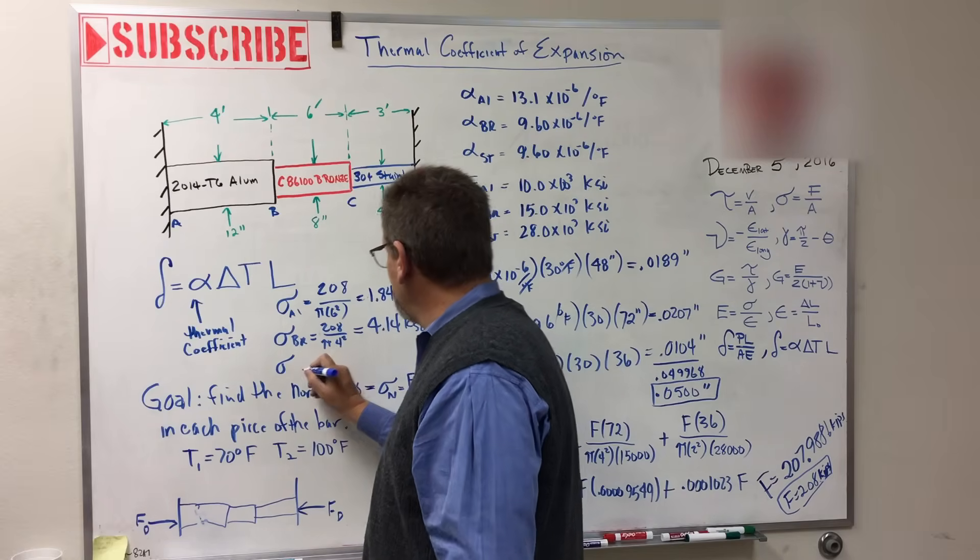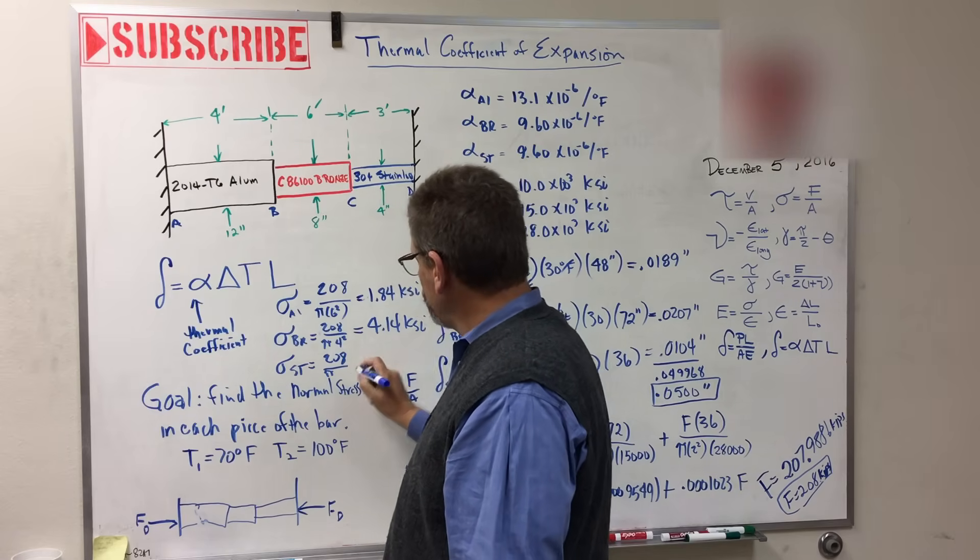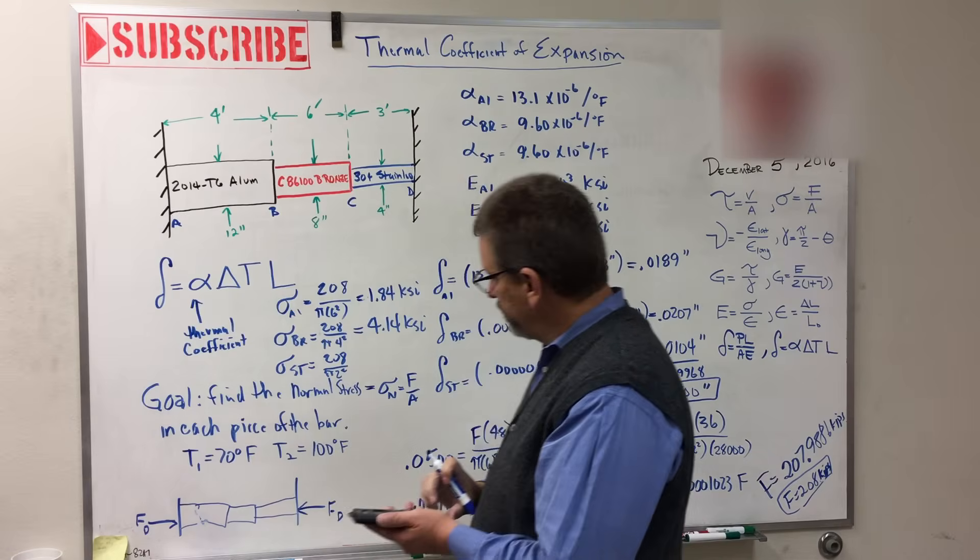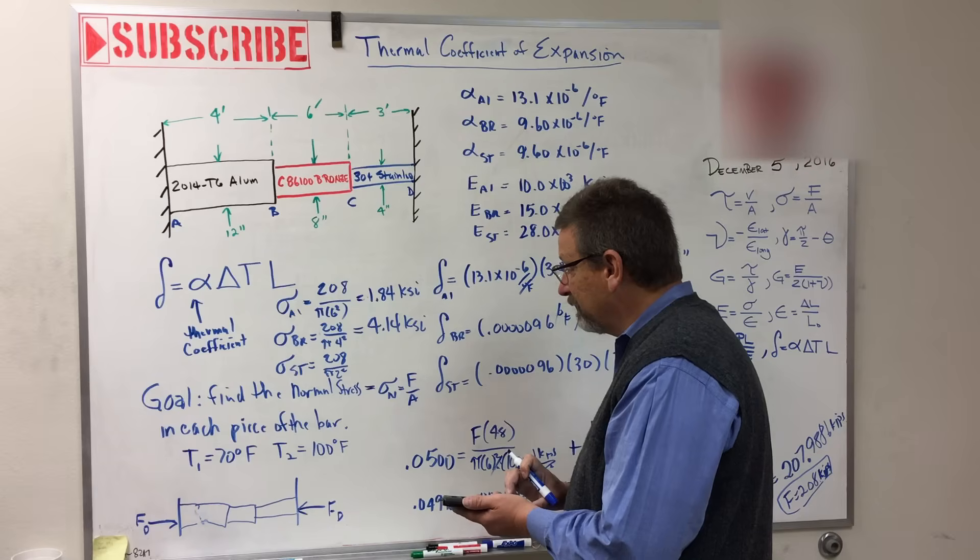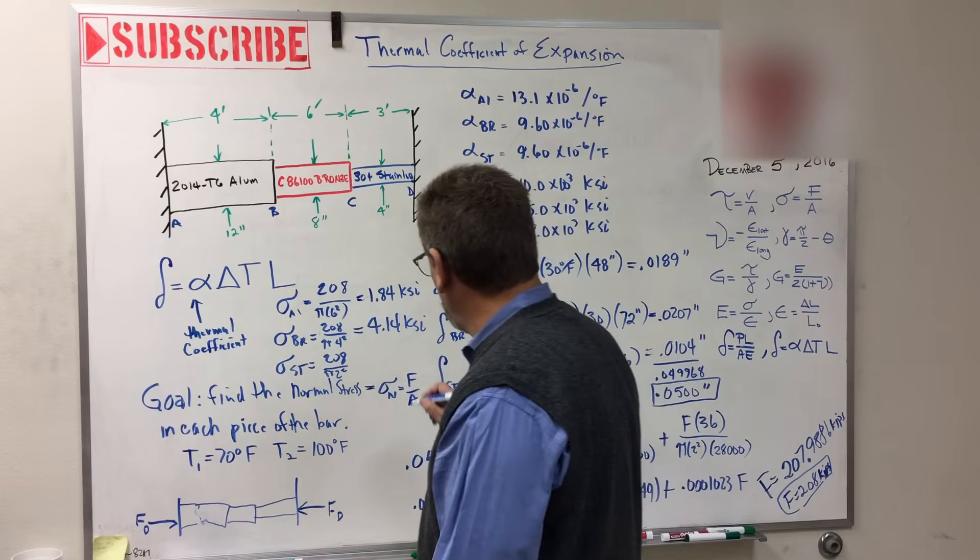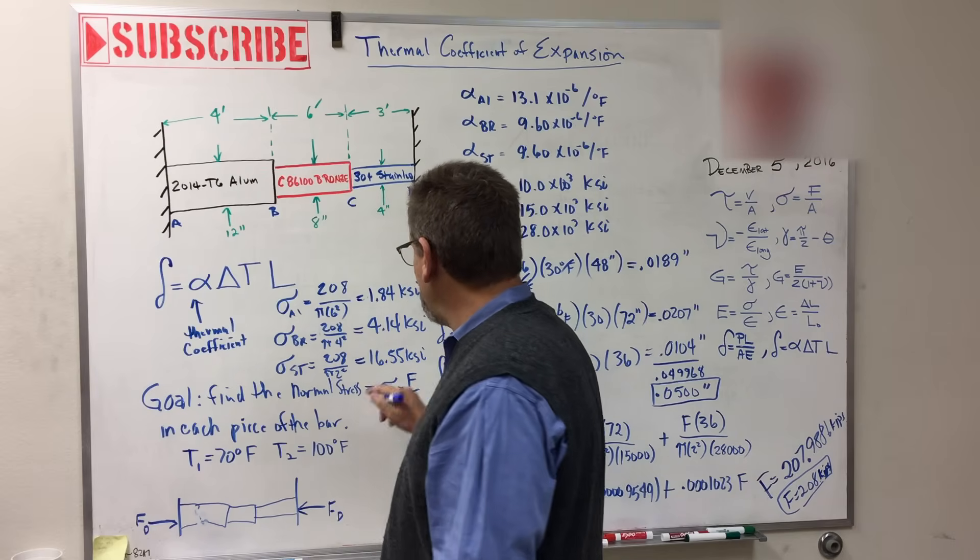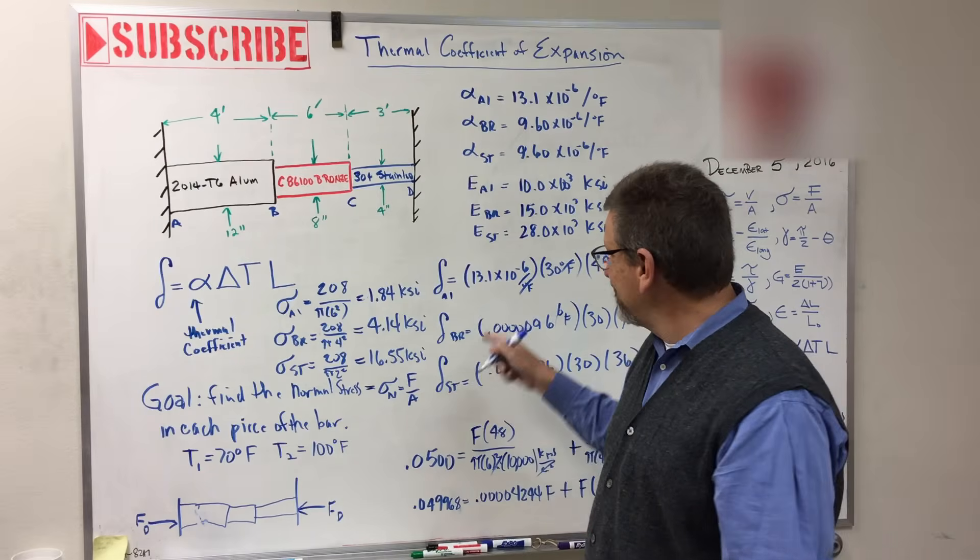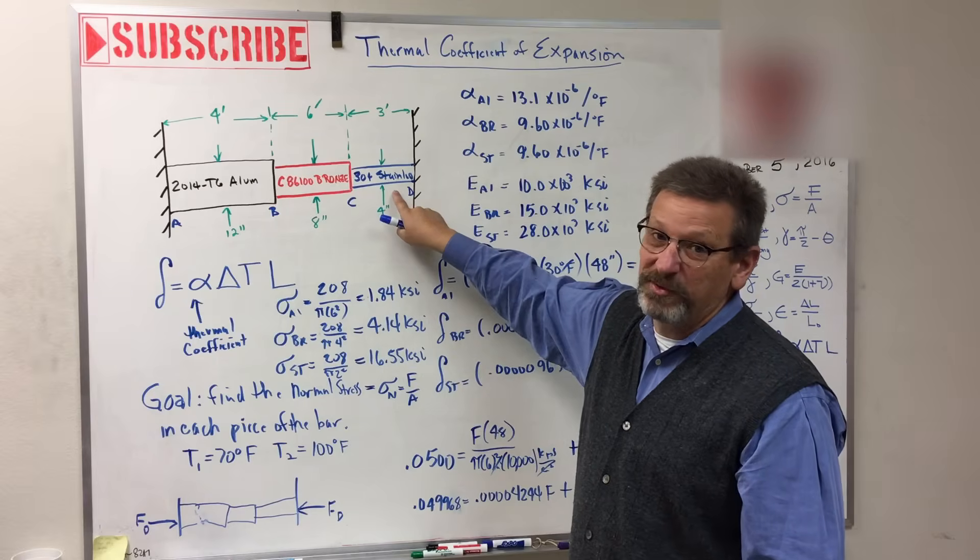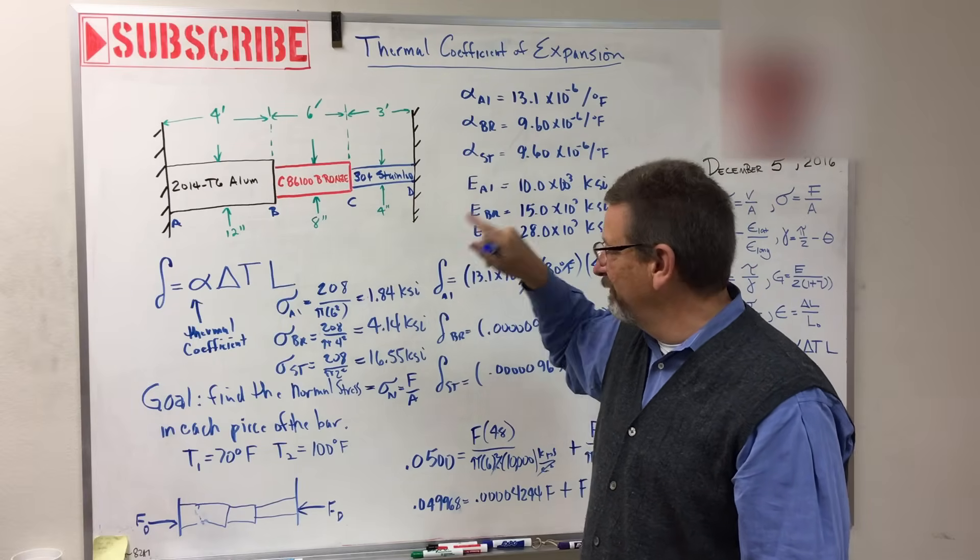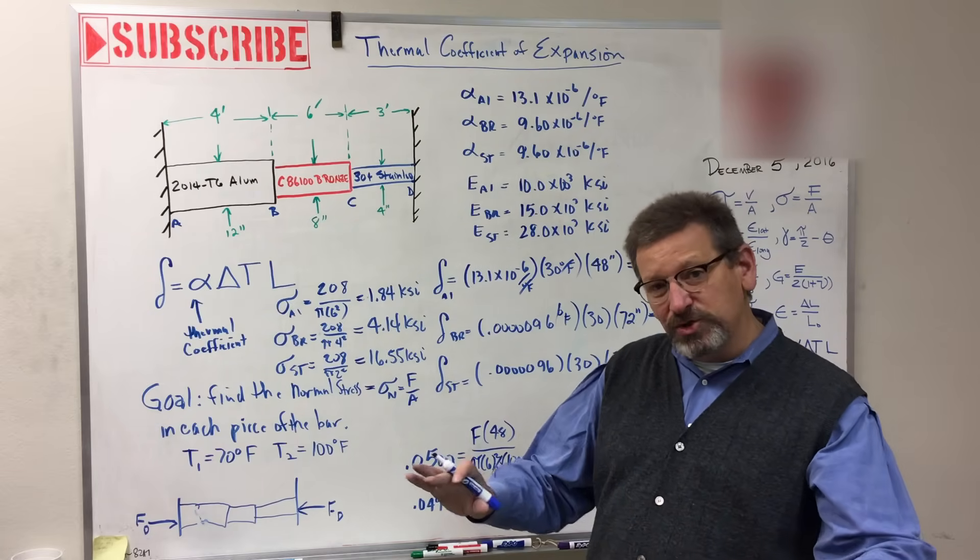So why is stainless the highest one? It seems like it's the hardest material. Remember, it's force divided by area. It's the one with the smallest cross-sectional area, so it has the highest stress in it. The big fat one down there has lots of area to distribute the load over. It's kind of low stress, man.